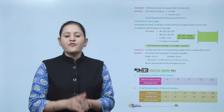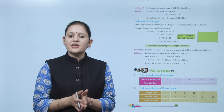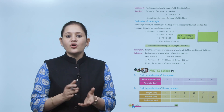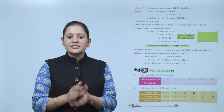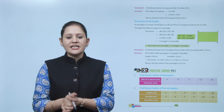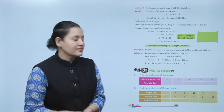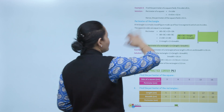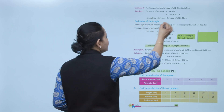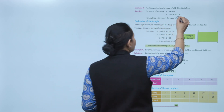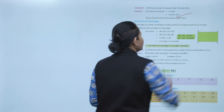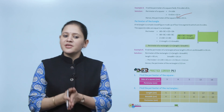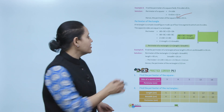Find the perimeter of a square field whose side is 8 meters. Perimeter of square equals 4 into side, which is 4 into 8, that is 32 meters. Next is perimeter of rectangle.